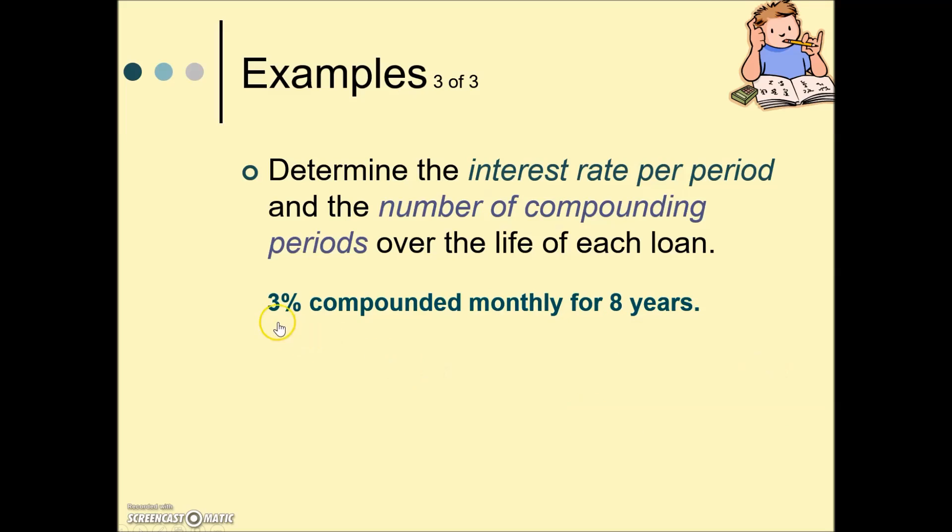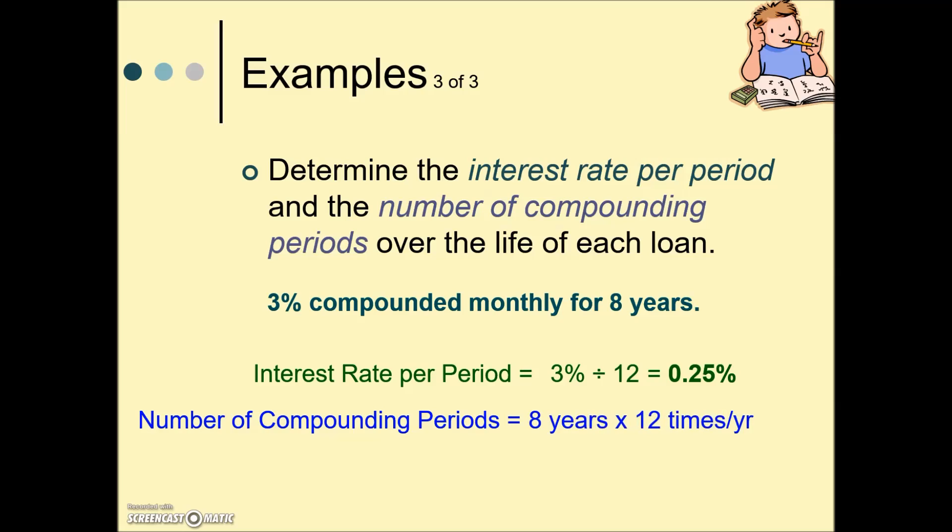In this last example we're given a 3% interest rate compounded monthly for eight years. The interest rate per period: we take our 3% and divide it by the frequency of compounding. Monthly is associated with 12, so 3% divided by 12 gives us 0.25%. How many compounding periods will there be? This is compounded monthly, 12 times per year for eight years, for a total of 96 compounding periods.